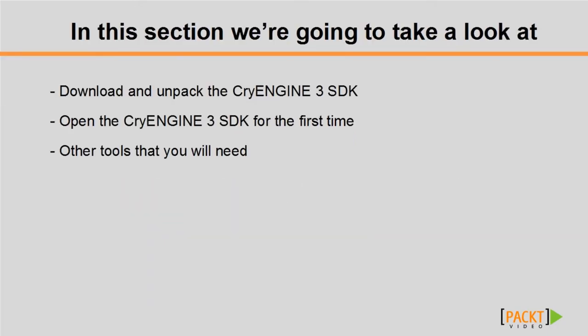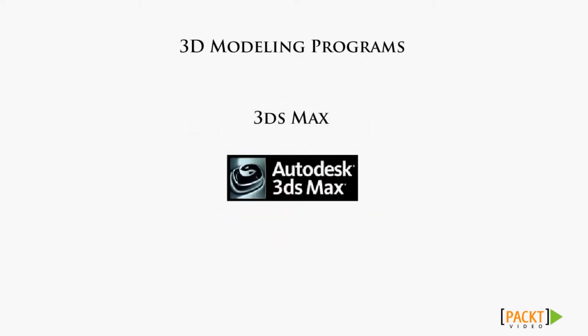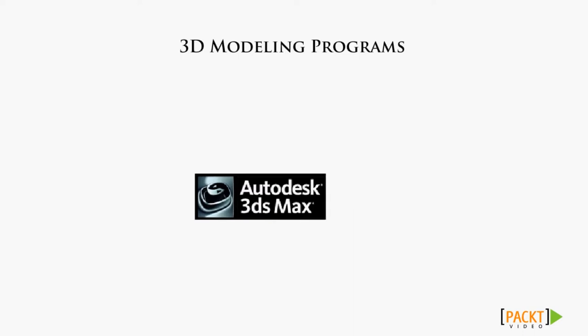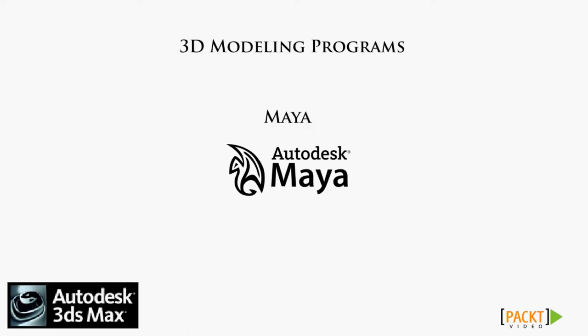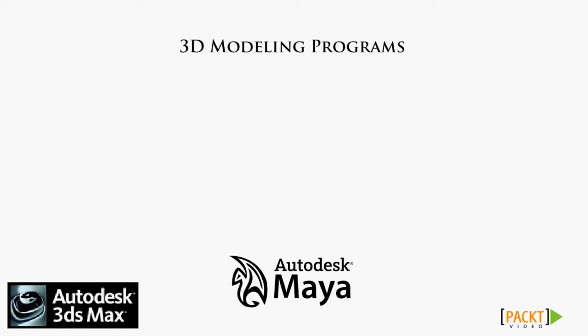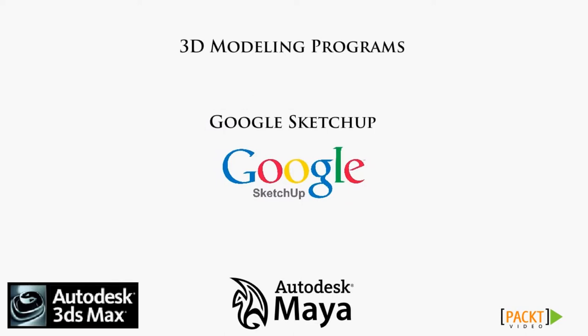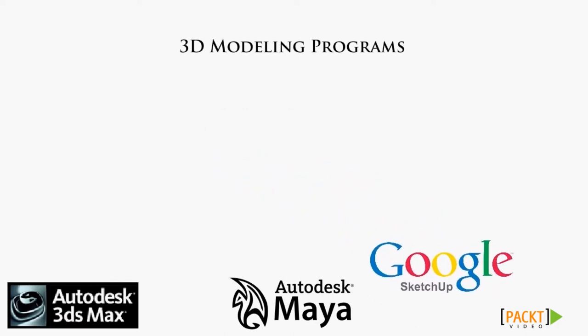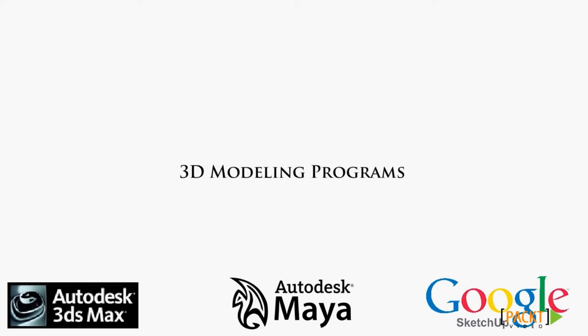Now we're going to move away from the editor and talk about other programs used in conjunction with CryEngine 3. This is by no means a full list — just the programs supported by Crytek. For 3D modeling, the main one is 3ds Max by Autodesk, where you create 3D models and animations. It's fairly expensive. Another option is Maya, which is better suited for characters than hard surface objects. Google SketchUp also has a free version that some have had success getting objects into the engine.